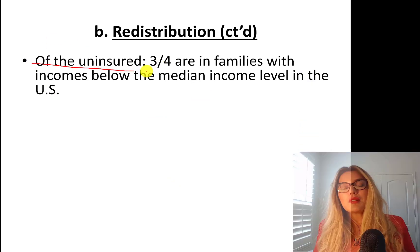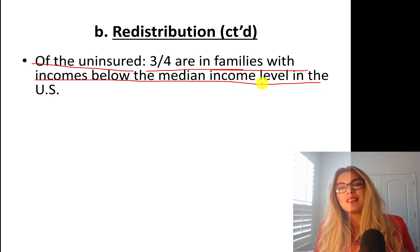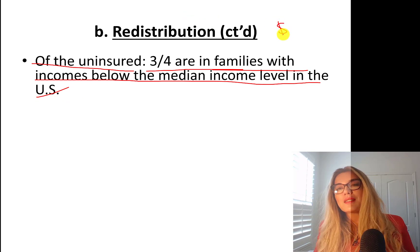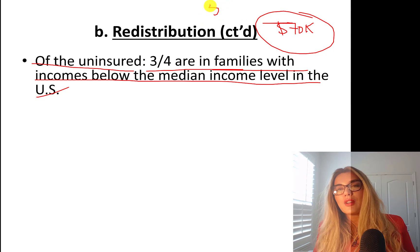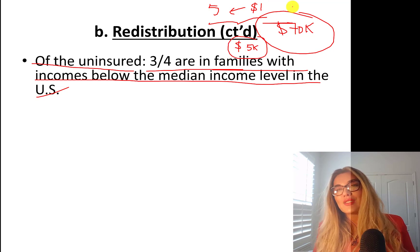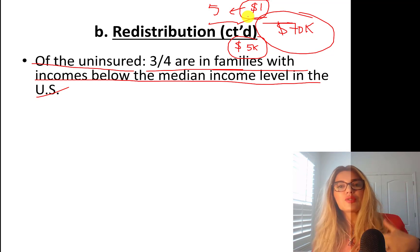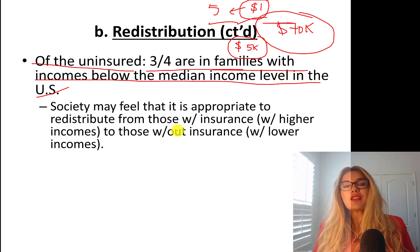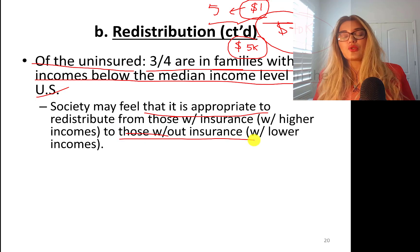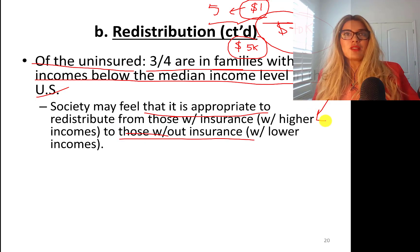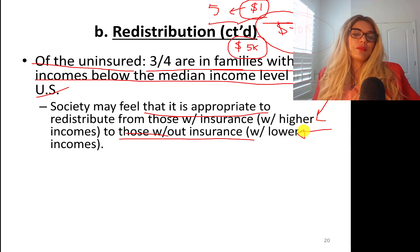A redistribution example: three quarters of uninsured families have incomes below the median income level in the U.S., which is about $71,000 per family. Imagine a family of five with insurance premiums of $1,000 each — that's $5,000 a month, or $60,000 a year just for insurance. The government created marketplaces to buy reasonably priced insurance. Society may feel it's appropriate to redistribute from those with higher incomes to those without insurance, so government taxes higher earners and starts programs to benefit people with lower incomes.